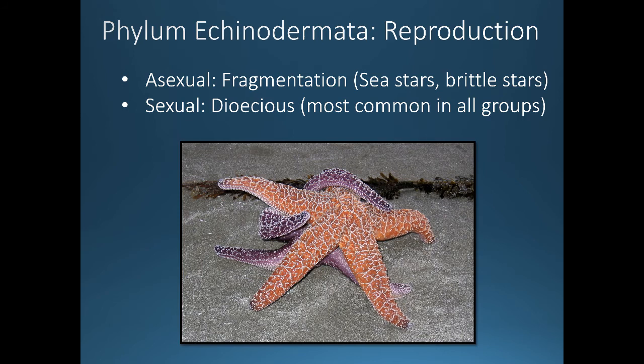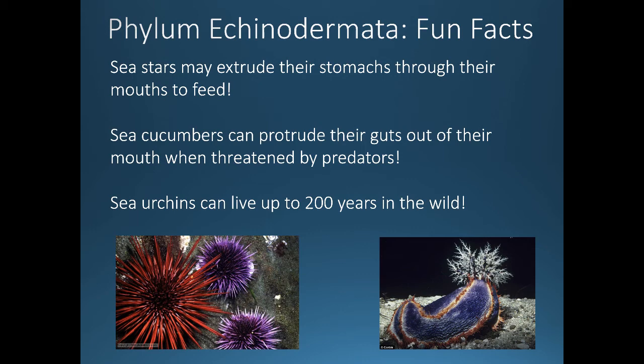Echinoderms reproduce in various ways, but the most common is sexual reproduction, and most echinoderms are dioecious with separate males and females. Some, like sea stars and brittle stars, also reproduce by fragmentation — if you break off an arm of a sea star, it will regenerate an entirely new sea star. Interestingly, sea stars can extrude their stomachs to feed externally, sea cucumbers can spit out their guts as defense, and sea urchins can live up to 200 years in the wild.